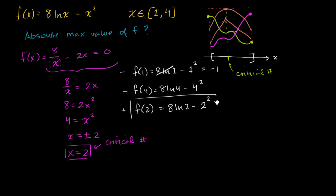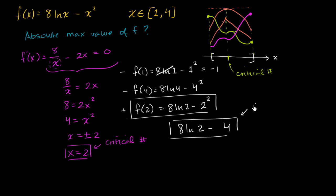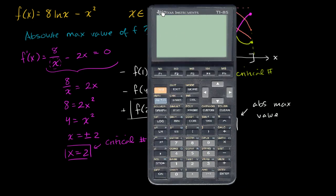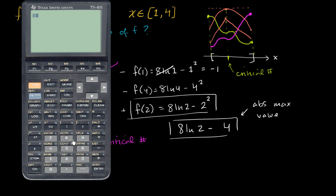So the maximum value happens when x equals 2, and that maximum value is 8 natural log of 2 minus 4. That is the absolute maximum value over the domain this function is defined on. If we verify with a calculator: f of 4 equals 8 natural log of 4 minus 16, which is approximately negative 5, so it's definitely not the maximum. And f of 2 equals 8 natural log of 2 minus 4, which is indeed a positive number. So we feel pretty good about what we did.